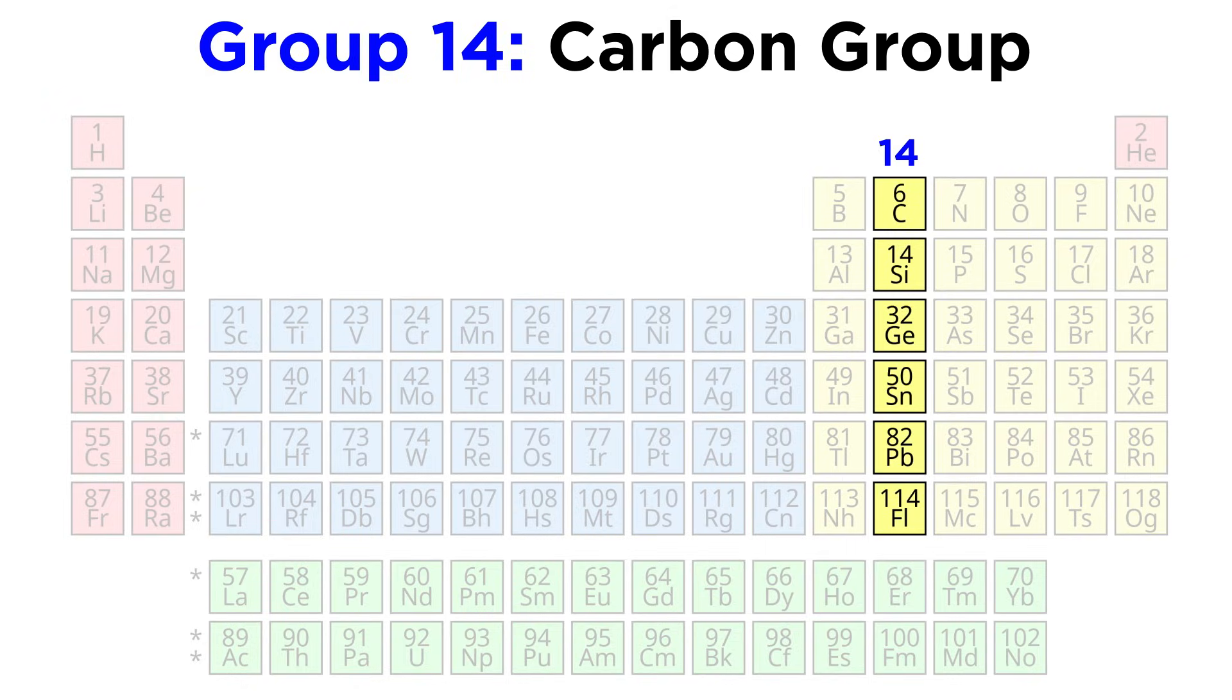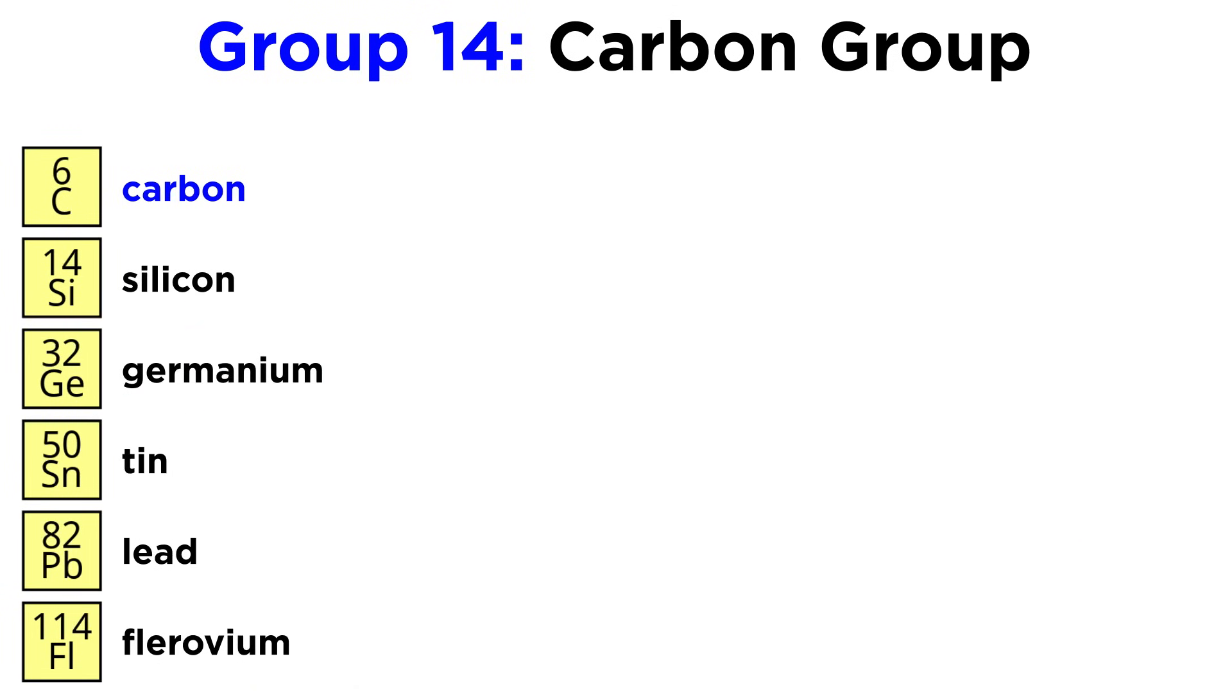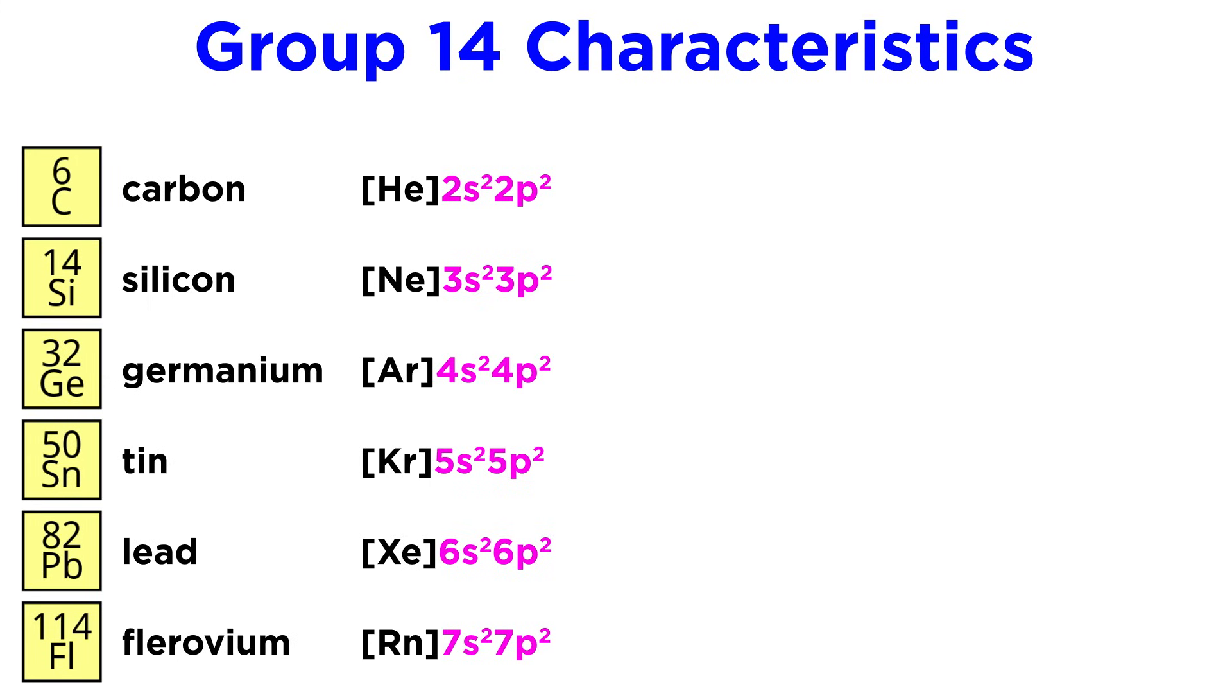This is known as the carbon group, since carbon sits right at the top. The other members of this group are silicon, germanium, tin, lead, and flerovium. These elements have electron configurations that end in NS2 and P2.